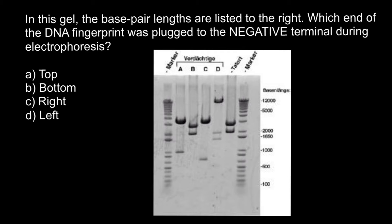I will explain the theory behind it. You probably saw many times pictures like this in different movies like Forensic Files, where scientists looking at such a picture can decide whether the suspect has a connection with a crime scene or not. So here is the problem: in this gel, the base pair lengths are listed on the right — which end of the DNA fingerprint was plugged to the negative terminal during electrophoresis? Four possible answers are listed here.